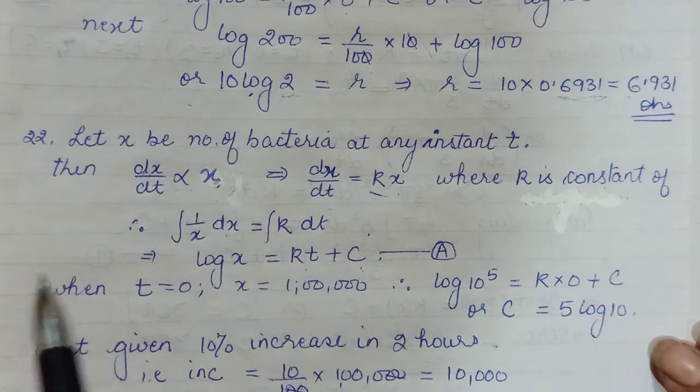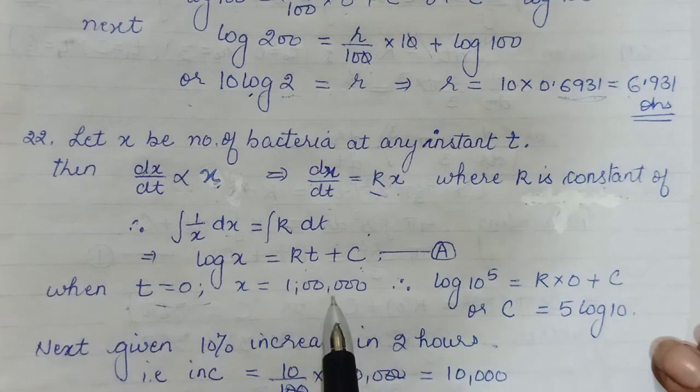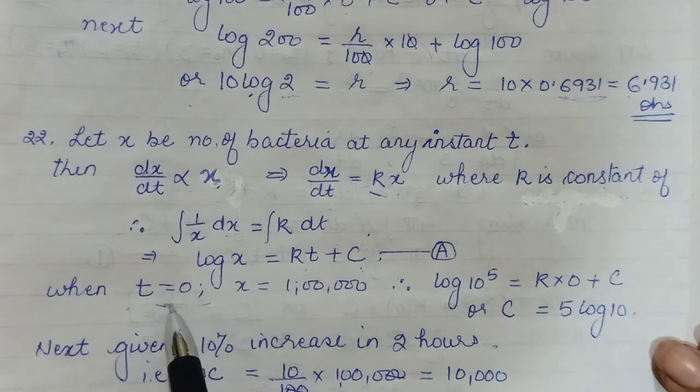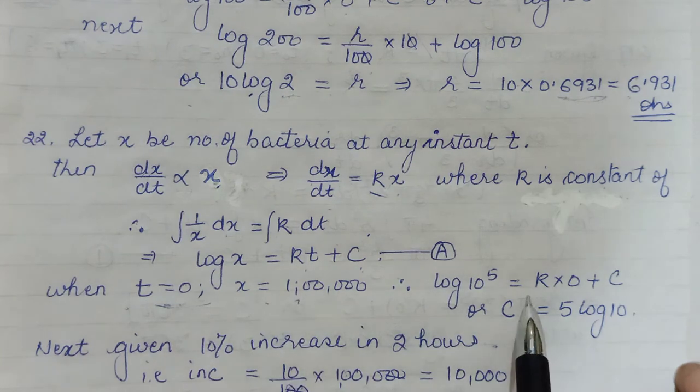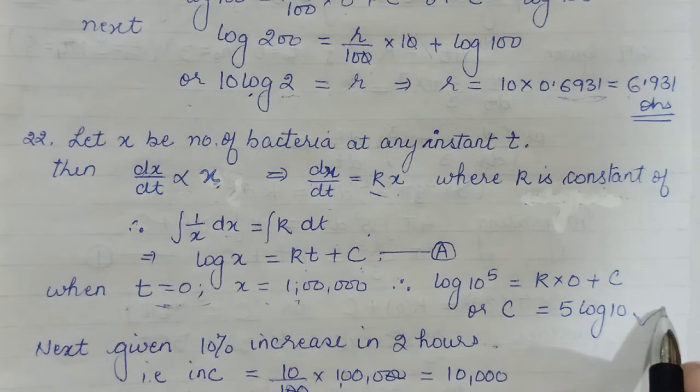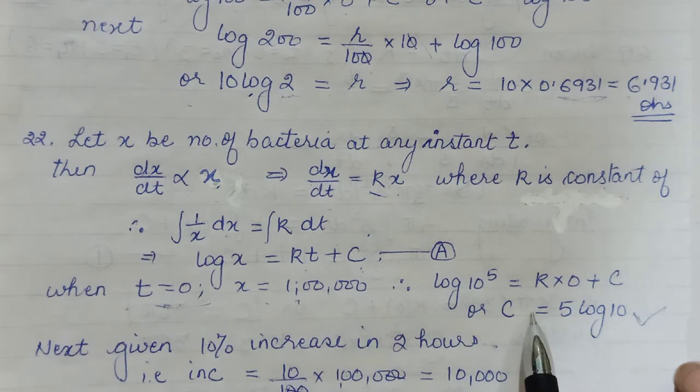C, k, all are our unknowns. So for that, when t was 0 initially, initially my t is always 0, then we have 1 lakh in our count. So using that I could evaluate my constant of integration C.